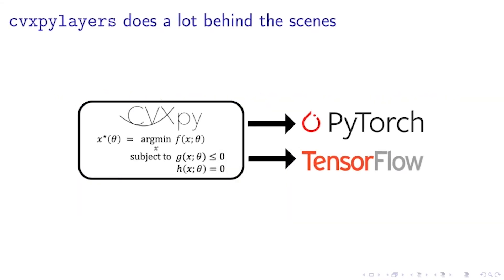As Steven talked about in the first part of this tutorial, CVXPyLayers provides a really expressive domain-specific language on top of convex optimization that lets you export your convex optimization problem into a differentiable layer or module that you can use in PyTorch and TensorFlow and potentially other backends as well.